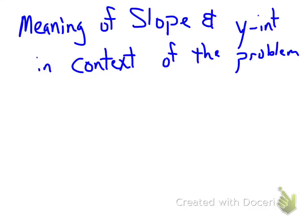This video is going to be on the meaning of slope and the y-intercept in context of the problem. So when you're looking at a graph, what does the slope actually mean, and what does the y-intercept actually mean?